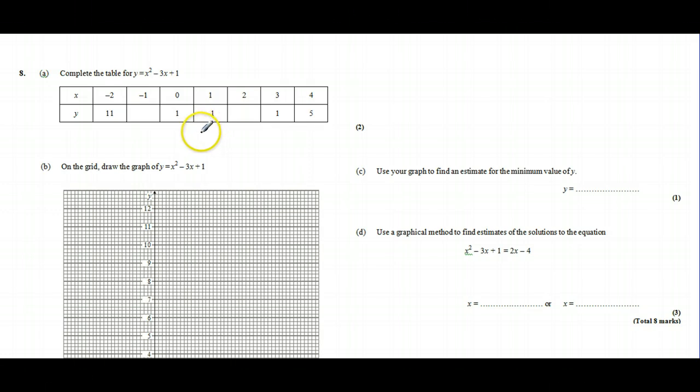Hi, this is a GCSE mathematics question which involves plotting a quadratic from a table of values, using that graph to estimate the minimum value for y, and then finding a solution to an equation involving a quadratic and a linear equation using the graph. To start, we've got a table of values to complete. We're going to need to substitute x equals -1 and x equals 2 into our equation.